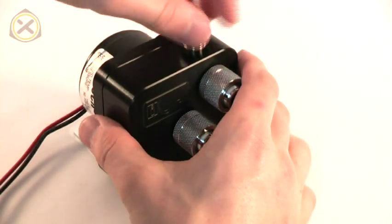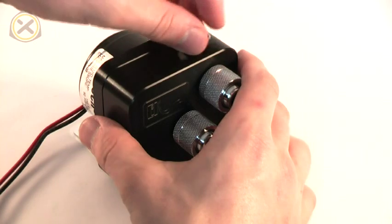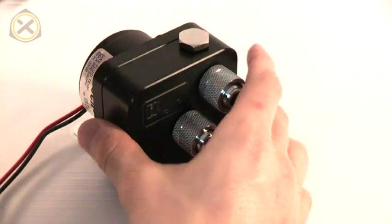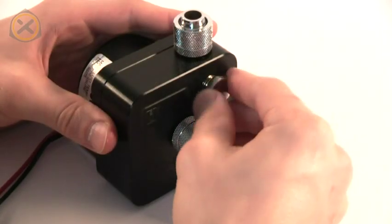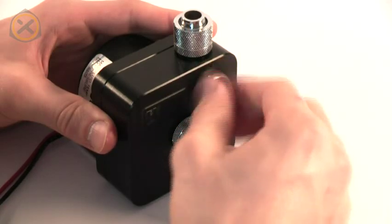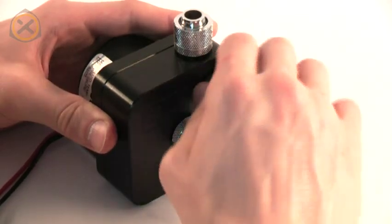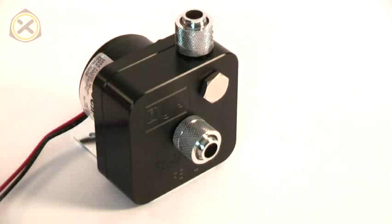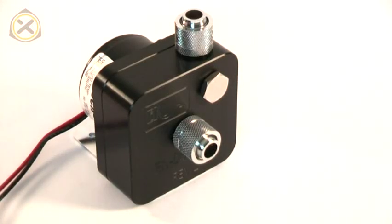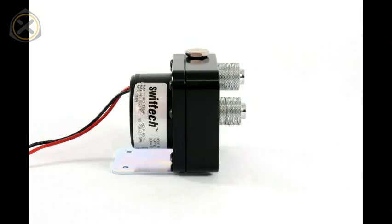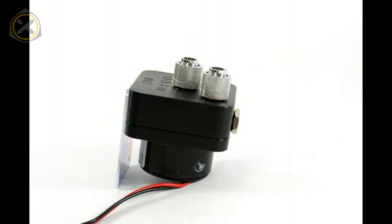Now close off the unused thread using the stop fitting that comes supplied with the EK top and the pump is ready to be used. The pump can run properly with the inlet oriented horizontally or vertically facing upwards. It can't run with the inlet pointing downwards however.